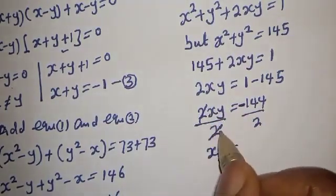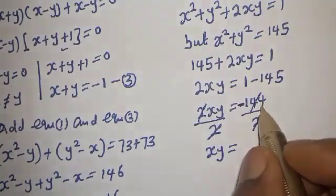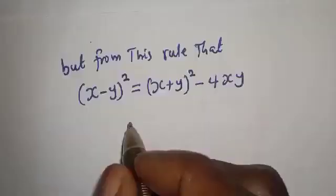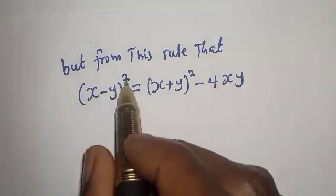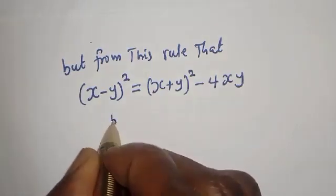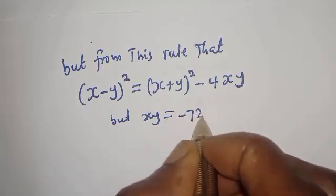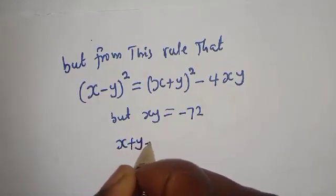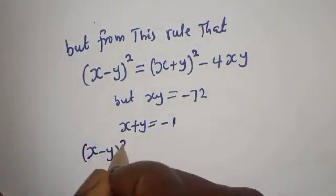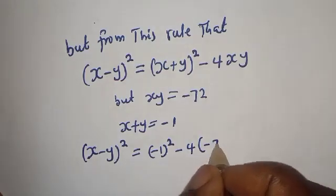Dividing both sides by 2, xy equals minus 72. Now using the identity: (x minus y) squared equals (x plus y) squared minus 4xy. We know xy equals minus 72 and x plus y equals minus 1. Substituting: (x minus y) squared equals (minus 1) squared minus 4 times (minus 72).